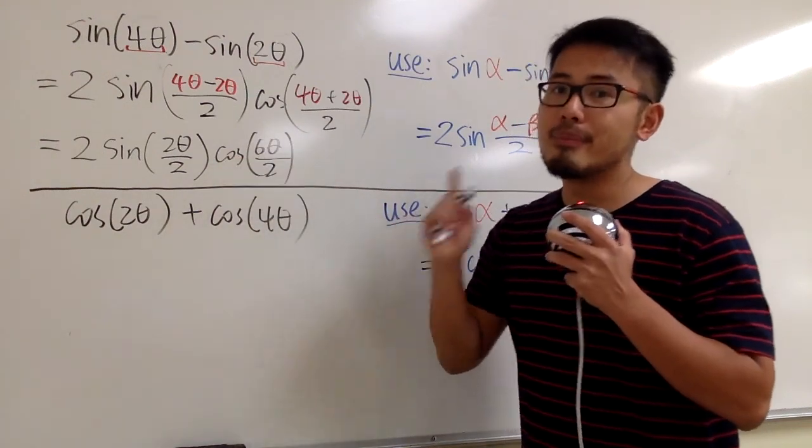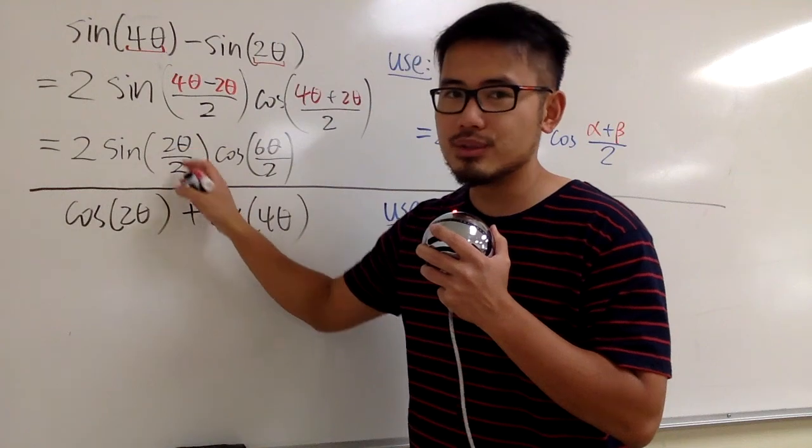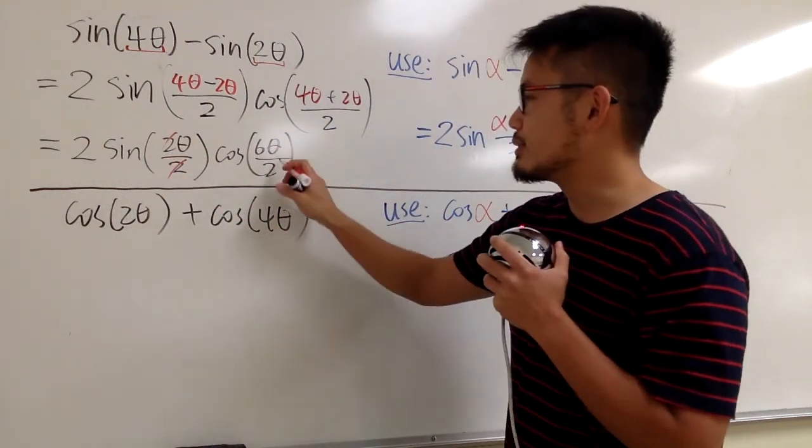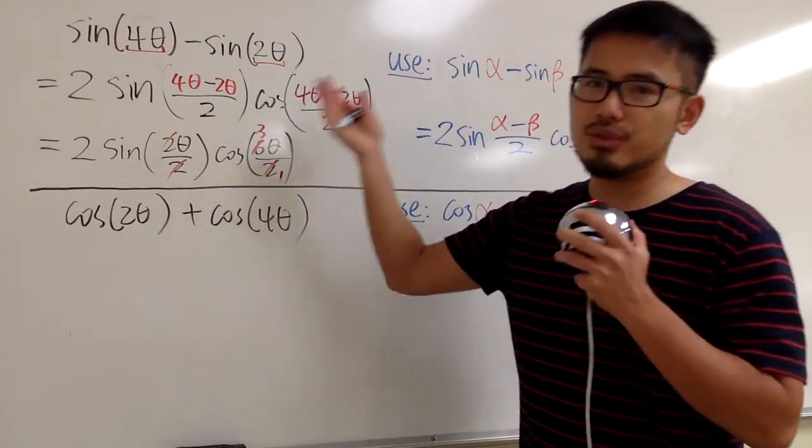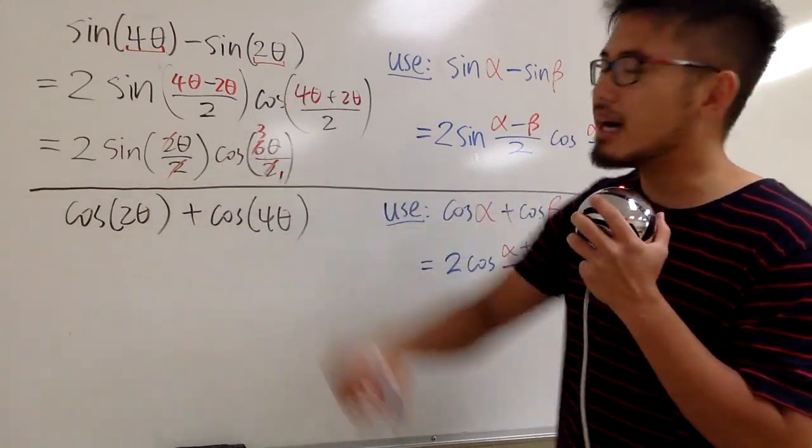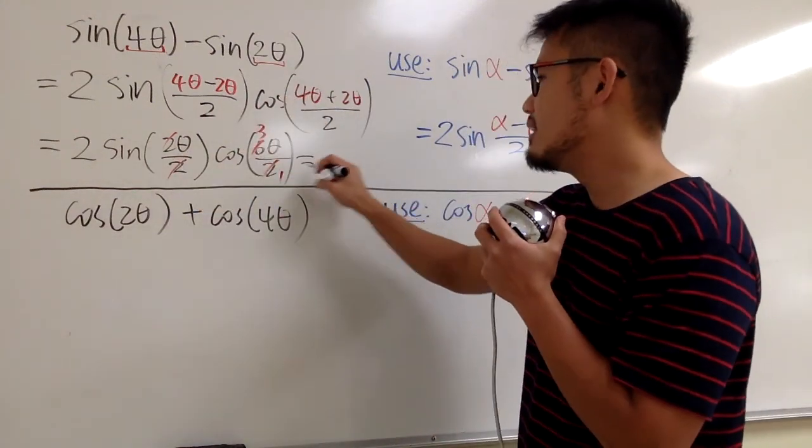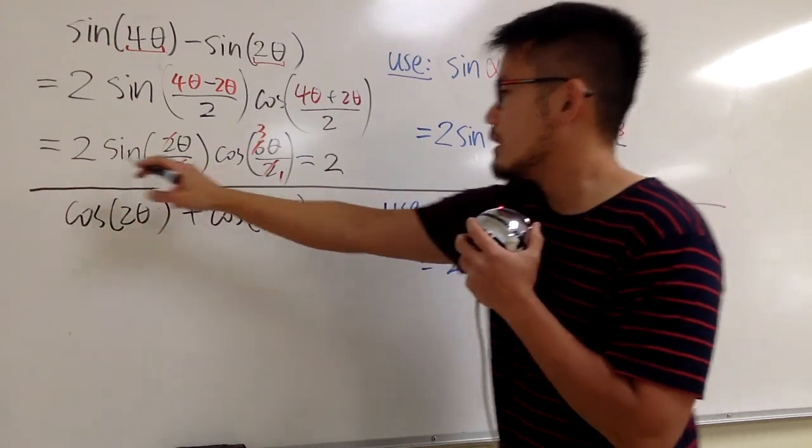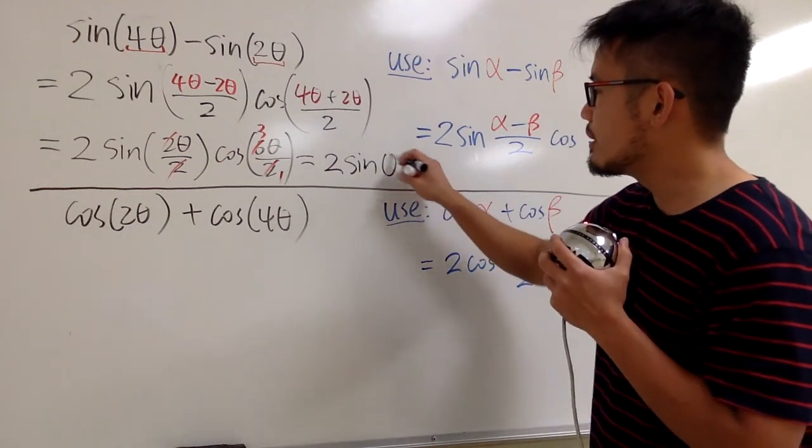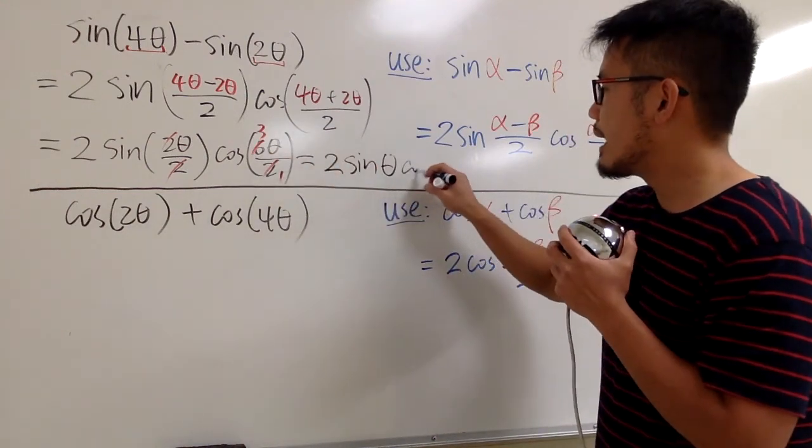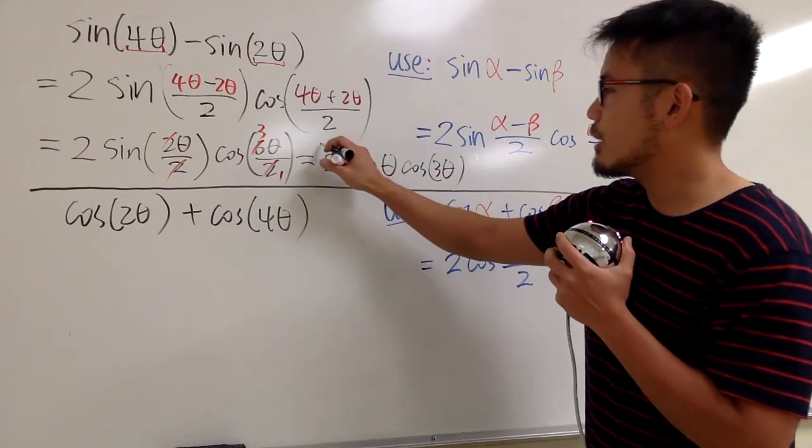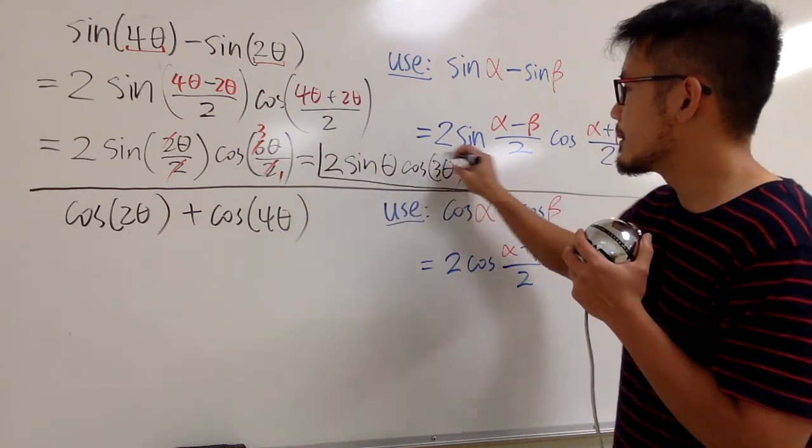Is this it? No, because right here, this 2 and that 2 can be reduced. And then right here, the 6 over 2 also can be reduced. This is 1, this is 3. So be sure, be sure you do this. Simplify the answer as much as possible. So at the very end, the answer should be 2 sine, and then we just have theta inside for the first part. And then we multiply by cosine 3 theta, like this. And I will box this for the answer.